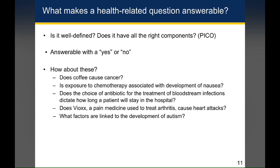The second question — 'Is exposure to chemotherapy associated with development of nausea?' — does better. It defines the exposure and the outcome, but hasn't necessarily specified the population. Is this patients with all cancers? There are also other reasons people get chemotherapy, such as certain rheumatologic conditions. And we haven't said what the comparison group is. Whether you compare chemotherapy-exposed patients to the general public versus one chemotherapy to another are very different questions, and the comparison group will really dictate what question you're actually answering.